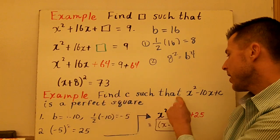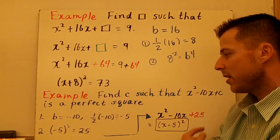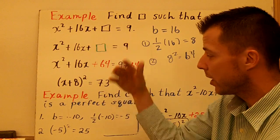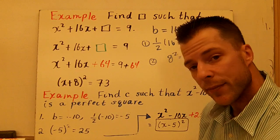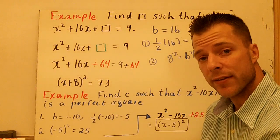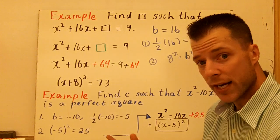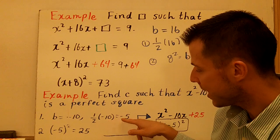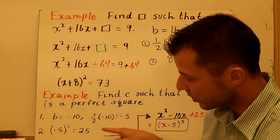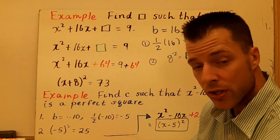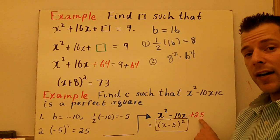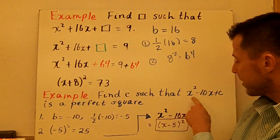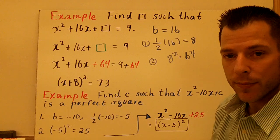Example two: find c such that x squared minus 10x plus c is a perfect square. Same process — instead of having a box, we have the variable c. Step one, identify b and take half of it. b is negative 10, and half of negative 10 is negative 5. Step two, square that result — negative 5 squared is 25. So c is 25. We don't have to add it to both sides; we're just identifying c. c is the value that makes x squared minus 10x a perfect square.